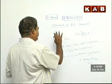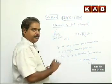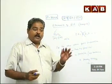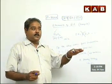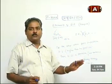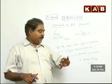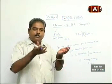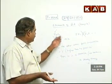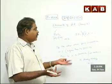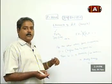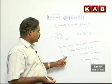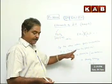When oxygen says it wants minus 2 and lead says okay, oxygen remains minus 2. But if the other element says 'oxygen, please change,' then oxygen may change its mind — it changes to minus 1 and becomes a peroxide. Initially, oxygen says it wants minus 2. If the other element accepts, oxygen remains minus 2. But if the other element objects, oxygen changes to minus 1.